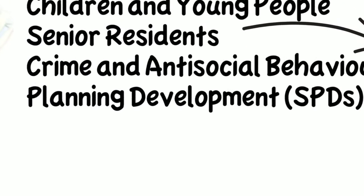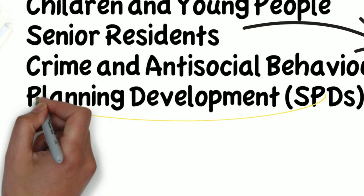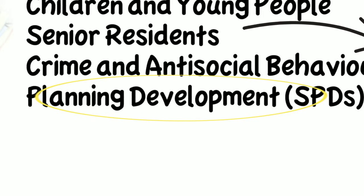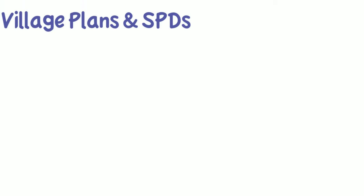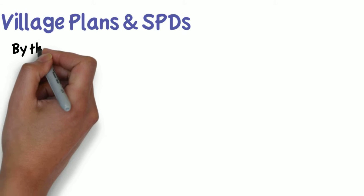There is a new section in each village plan relating to planning control. This is called a supplementary planning document, or an SPD. The SPD is a specific part of the village plan which the planning committee at the council refers to when making planning decisions.